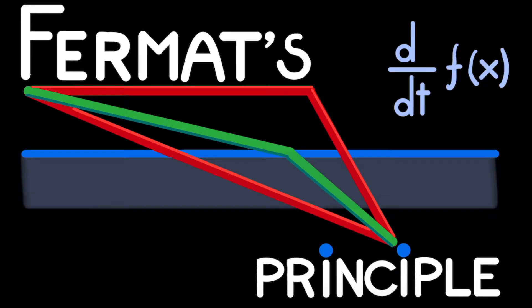In this video, we'll be deriving the formula that describes Fermat's principle, which basically allows you to predict how light will behave at the interface between two media. However, to derive this formula, we don't need to talk about light in any form. In fact, we'll be using this as an exercise application on derivatives, since it's the perfect example of how to translate a problem statement written in words to a mathematical formulation which you can then solve.